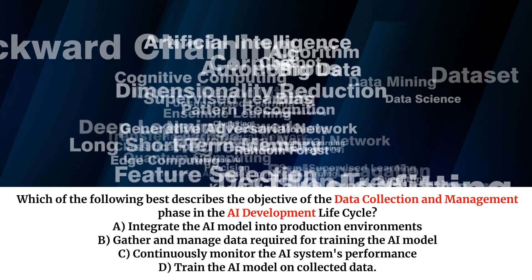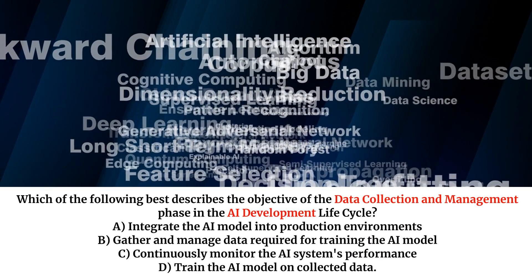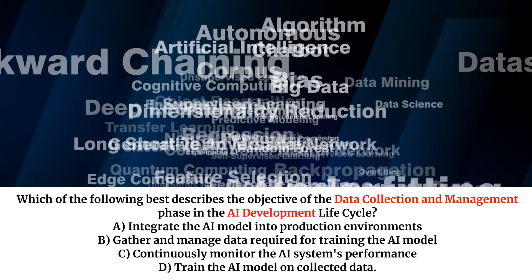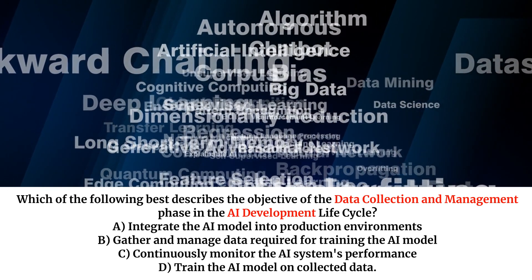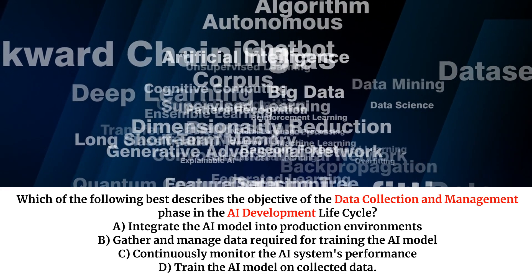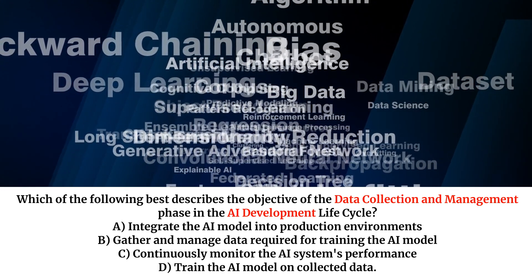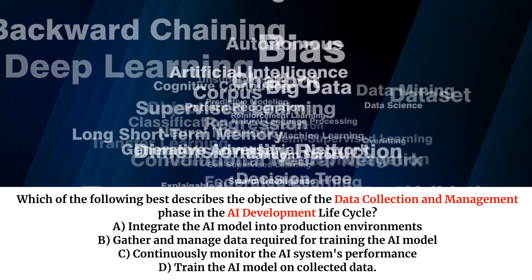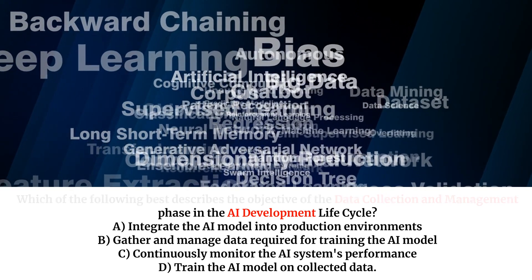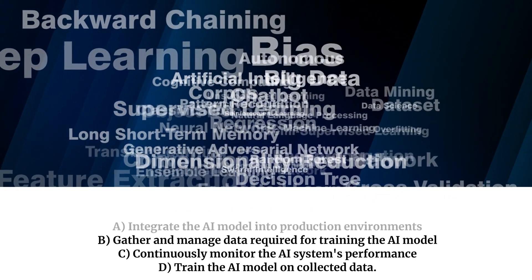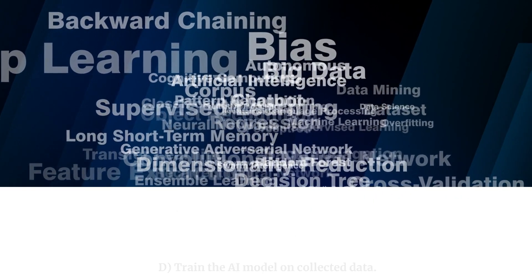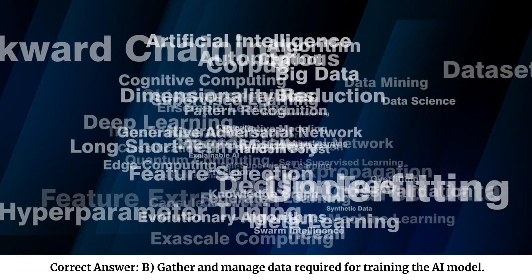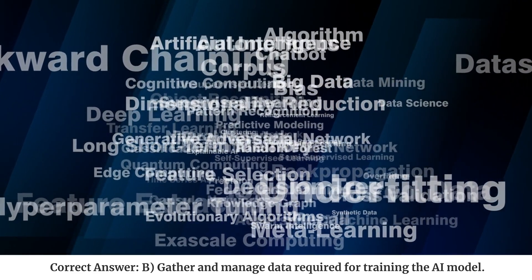Which of the following best describes the objective of the data collection and management phase in the AI development lifecycle? A. Integrate the AI model into production environments. B. Gather and manage data required for training the AI model. C. Continuously monitor the AI system's performance. D. Train the AI model on collected data. Correct answer: B. Gather and manage data required for training the AI model.